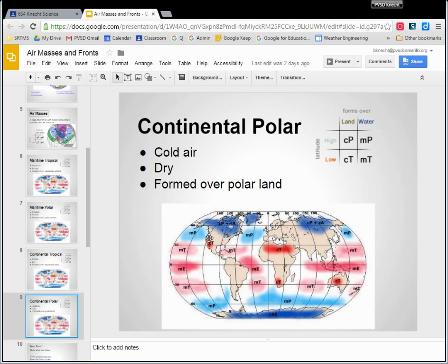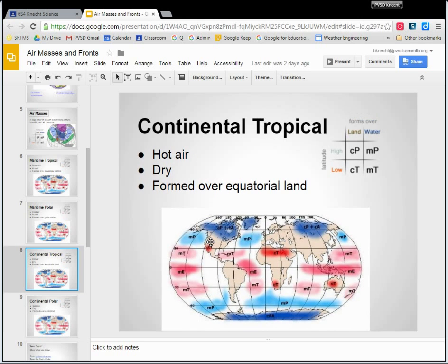So those are your four kinds of air masses. Continental polar, continental tropical, maritime polar, and maritime tropical.